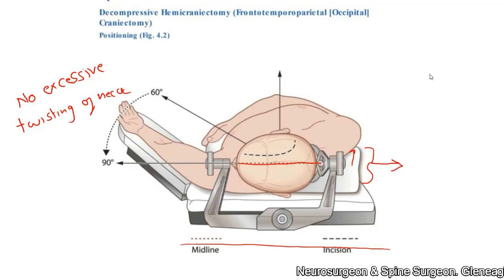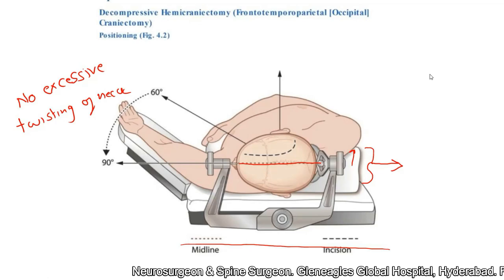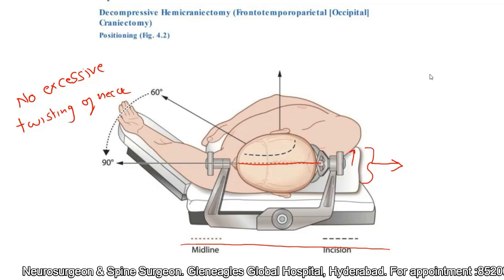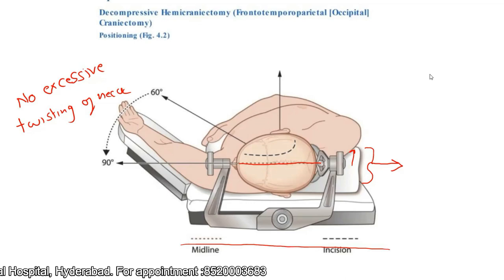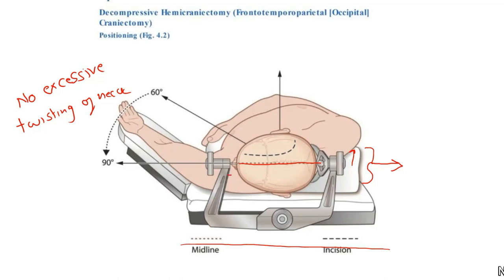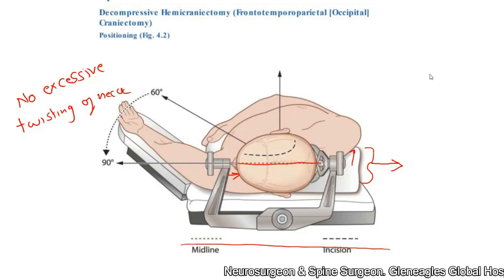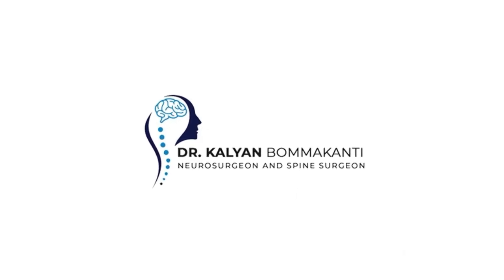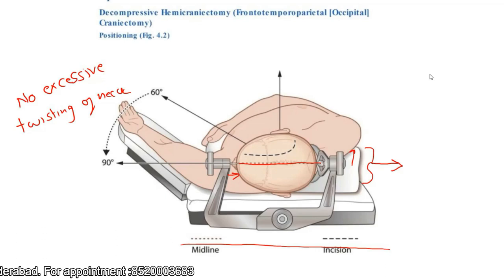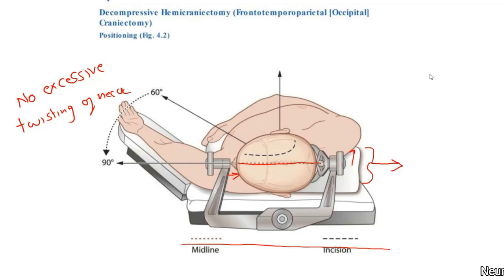The second important point is how to place the three pins of the three-pin headrest. I usually place the single pin on the frontal side and two pins on the occipital side. I place the single pin on the frontal side on the contralateral mid-pupillary line, ensuring it is at least one inch above the supraorbital ridge. If placed in the midline, you may enter the superior sagittal sinus if you penetrate the skull, which is catastrophic.